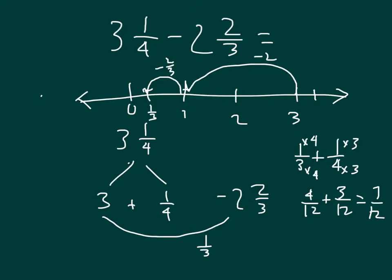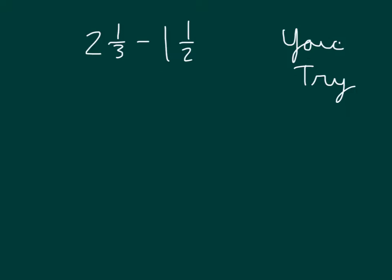There is always more than one way to solve and look at a problem. Here is an opportunity for you to try: 2 and 1 third minus 1 half. Make sure to try the problem two different ways. If we have 2 and 1 third minus 1 half, we want to make sure that we make denominators that are the same. We could have chosen 6.